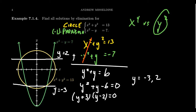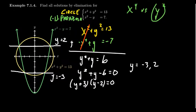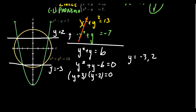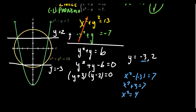I'm going to use x² - y = 7 so I don't have to bother squaring the y-coordinates. For y = -3: x² - (-3) = 7, so x² + 3 = 7, giving x² = 4, and x = ±2. This gives us two points of intersection: (2, -3) and (-2, -3).